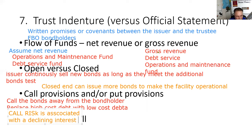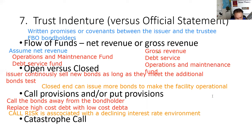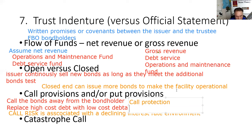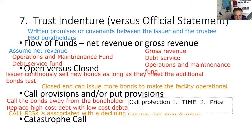Call risk is associated with a declining interest rate environment. There's also what's called call protection, which consists of two things: time and price. How long before the issuer can call the bonds, and at what price? So maybe the call protection period is five years — this bond can't be called for five years — and if they do call it, they have to give you 102, an extra $20 per bond as a prepayment penalty.